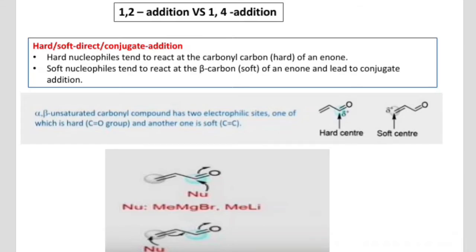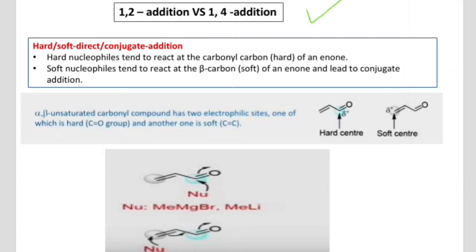We will now study the conjugate addition reactions. There will be 1,2-addition reactions and 1,4-addition reactions. But before studying these, we will study hard and soft nucleophiles. Hard nucleophiles tend to react at the carbonyl carbon of an enone, while soft nucleophiles react at the beta carbon of the enone, leading to conjugate addition.